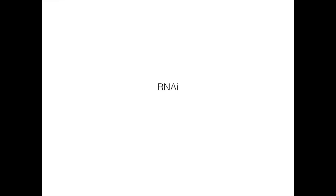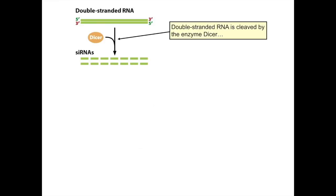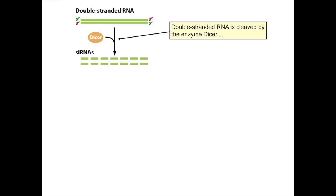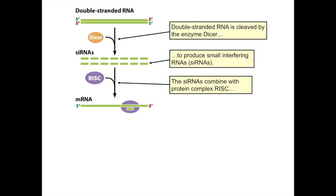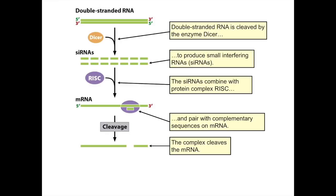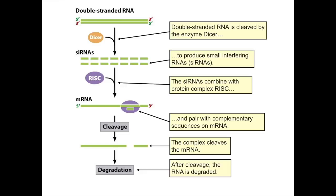In eukaryotes, RNA can play an important role in gene regulation, and one example of this is RNAi. This is also used as a powerful technique in molecular biology to knock down gene function. During RNAi, double-stranded RNA is cleaved by the enzyme DICER, producing small interfering RNAs, or siRNAs. The siRNAs combine with the protein complex RISC and pair with complementary sequences on the mRNA. This causes cleavage — the mRNA is degraded by the cell and will never be translated, reducing the function of the gene.